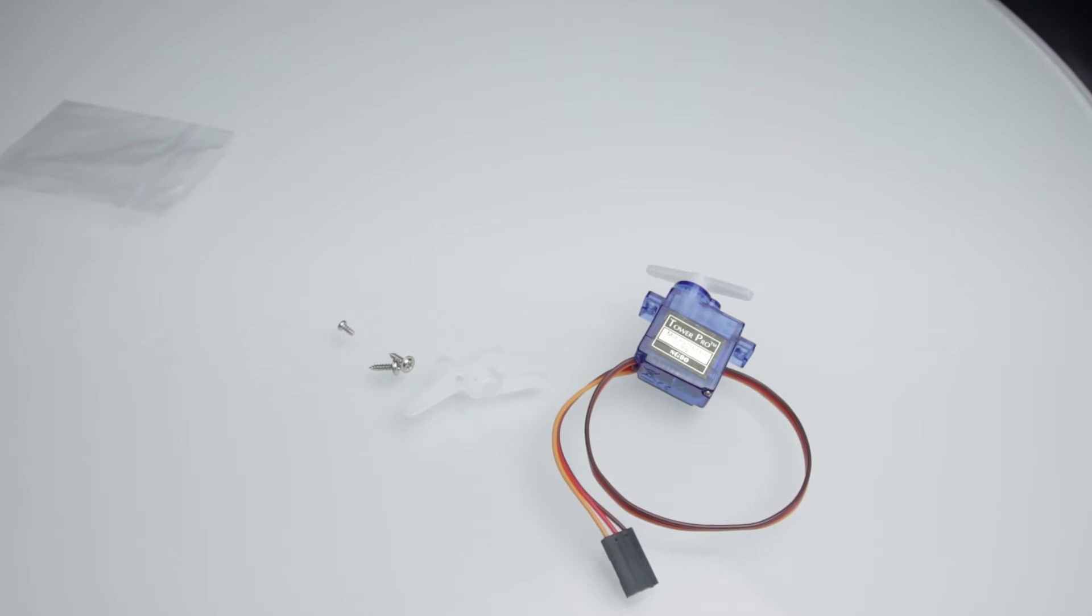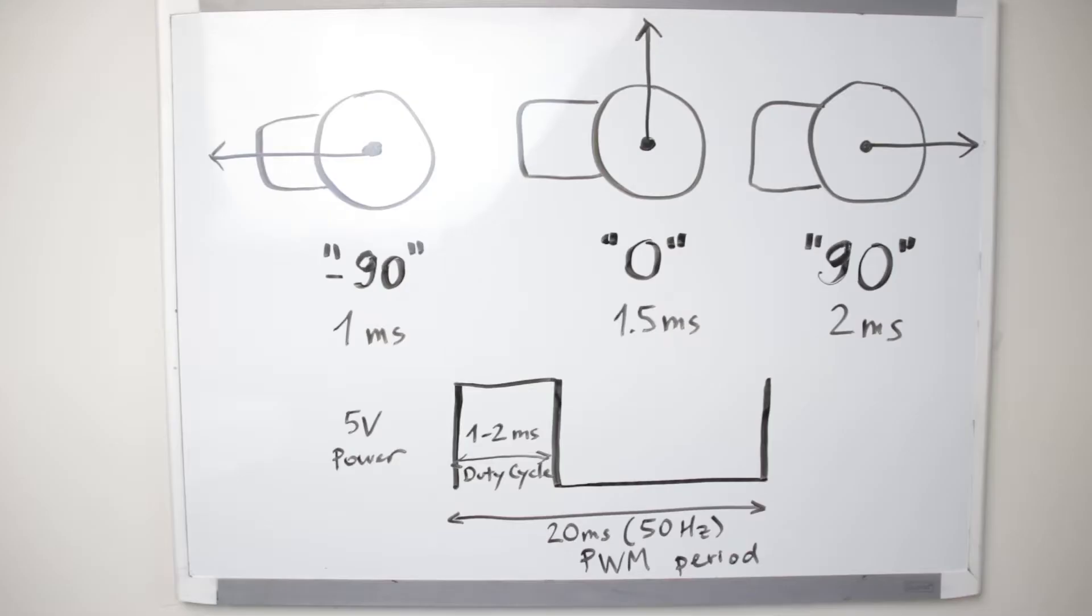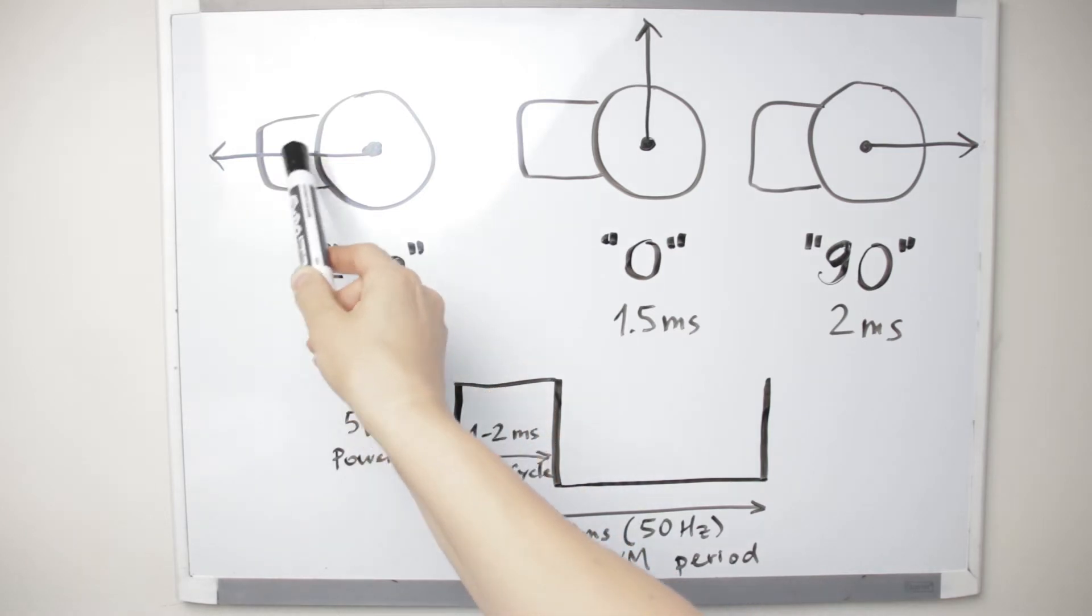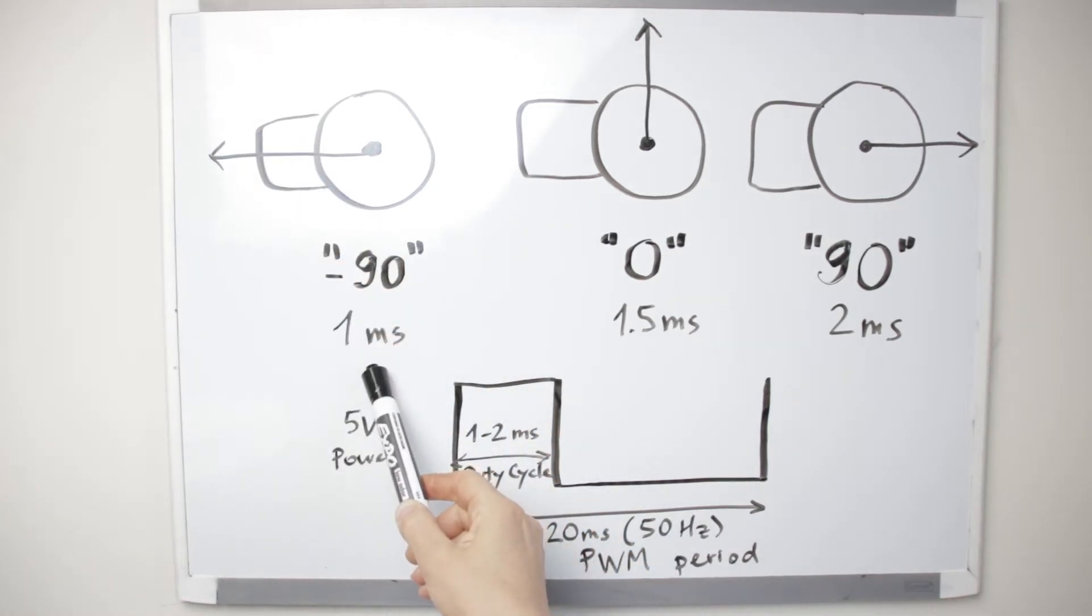Servo is controlled by sending electrical pulses from your UNO R3 board. These pulses tell the servo what position it should move to. Position 0 is middle, it has 1.5 millisecond pulse, position 90 is all the way to the right, 2 millisecond pulse, and position minus 90 is all the way to the left, 1 millisecond pulse.